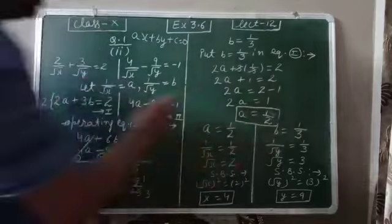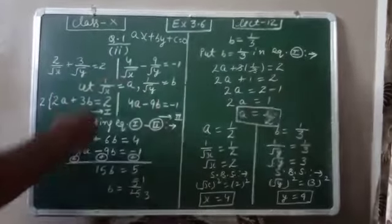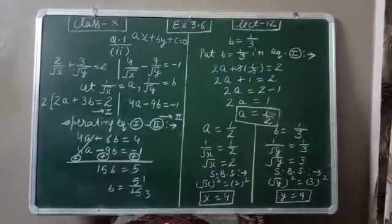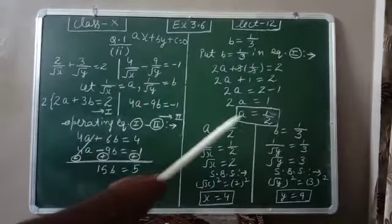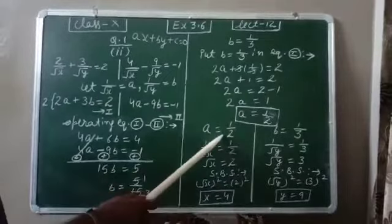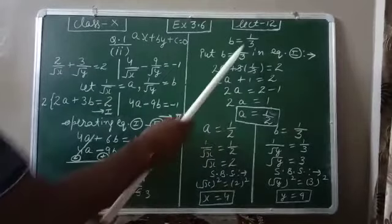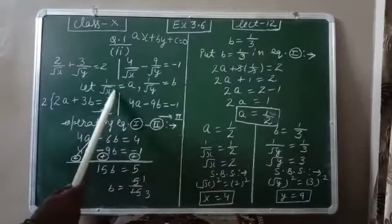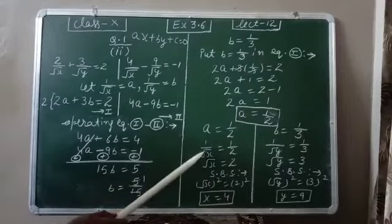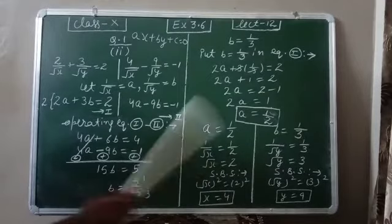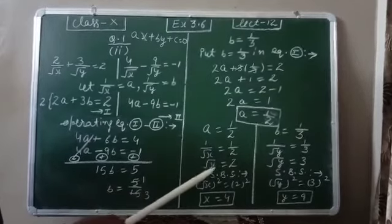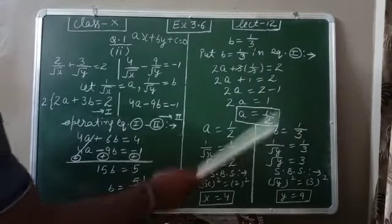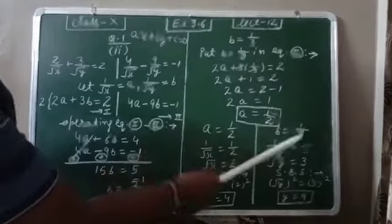Our question is in x and y so our answer should be in x and y. We write a equal to 1 upon 2 and b equal to 1 upon 3. We replace a by 1 upon root x and cross multiply. We get root x equal to 2.